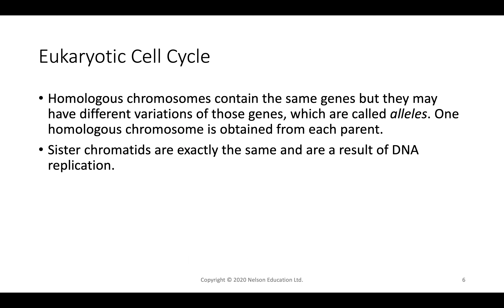Homologous chromosomes are chromosomal pairs where one is maternal and one is paternal. They have the same genes but may have different variations — alleles. For example, one allele might be for red hair and one for blonde. Alleles are variations of particular genes at a specific locus, and you get one from each parent. Sister chromatids, in contrast, result from DNA replication — they are an exact copy of one another. Homologous chromosomes have the same genes but potentially different alleles; sister chromatids have the exact same alleles throughout.